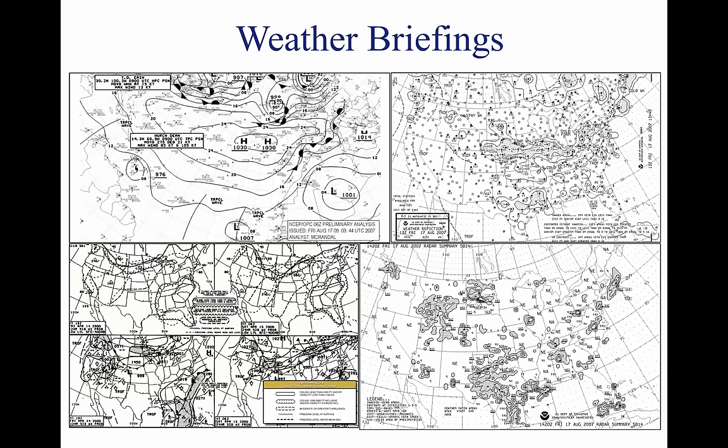For weather specialists to provide an appropriate weather briefing, they need to know which of the three types of briefings is needed: standard, abbreviated, or outlook. Other helpful information is whether the flight is VFR or IFR, aircraft identification and type, departure point, estimated time of departure (ETD), flight altitude, route of flight, destination, and estimated time en route (ETE). A standard briefing is the most complete report and provides the overall weather picture.